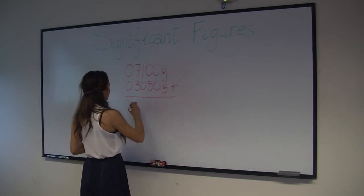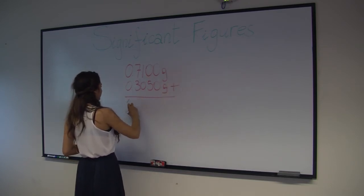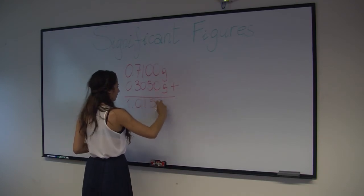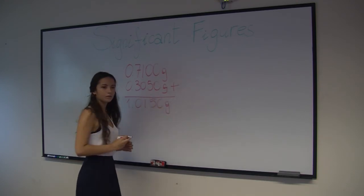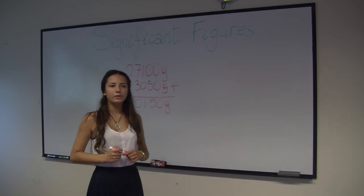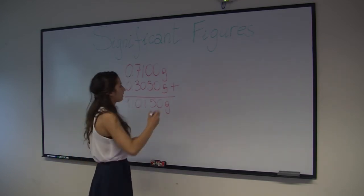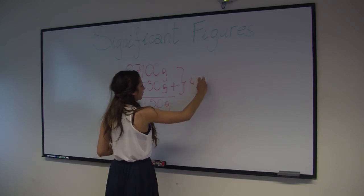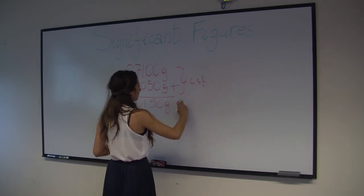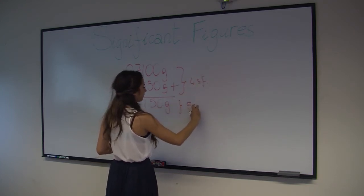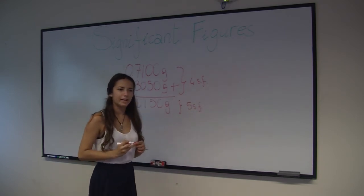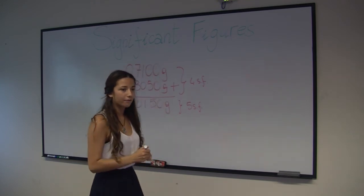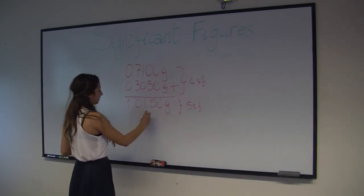And by performing a simple addition, we will obtain 1.0150 grams total. You may notice that the number of significant figures has gone from four to five. But that's okay, because your precision hasn't changed at all. You still have four decimal places of precision.